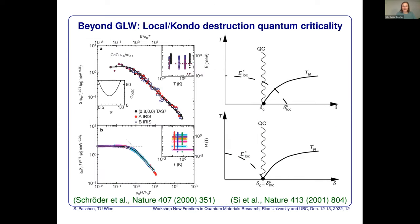What else could it be? A proposal motivated by inelastic neutron scattering experiments is a so-called Kondo-destruction quantum critical point, directly related to this localization-delocalization transition. What was observed in the neutron scattering data is a certain scaling — so-called energy-over-temperature scaling — with a fractional exponent that cannot be obtained in the Ginzburg-Landau-Wilson paradigm. The proposal is that local quantum criticality is the origin, and within this theoretical model, this type of scaling was indeed obtained.